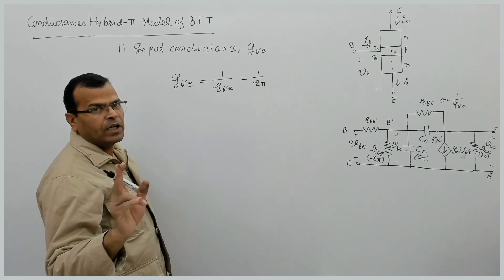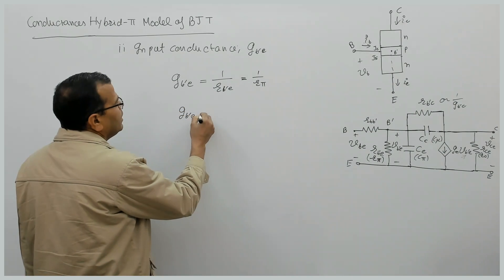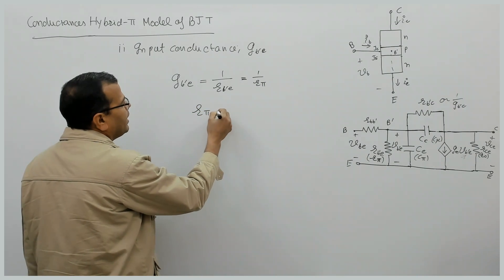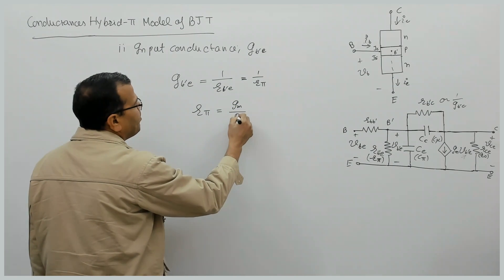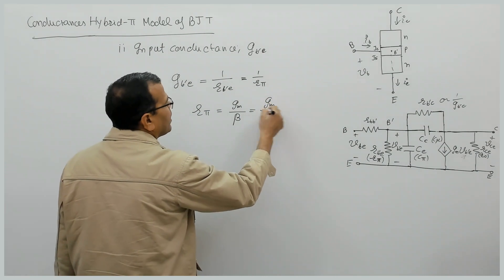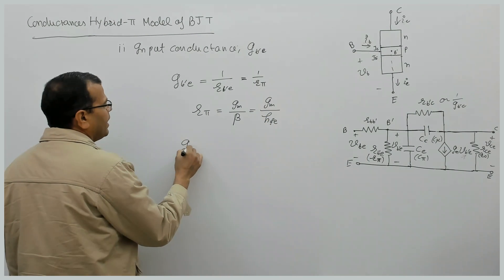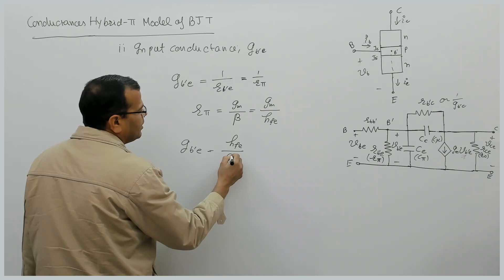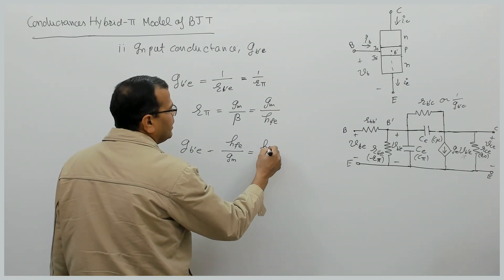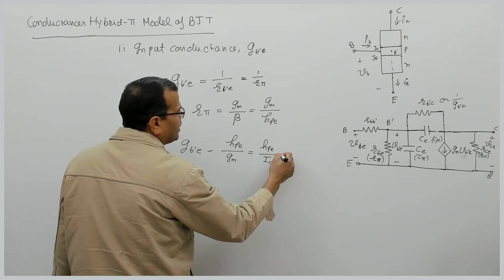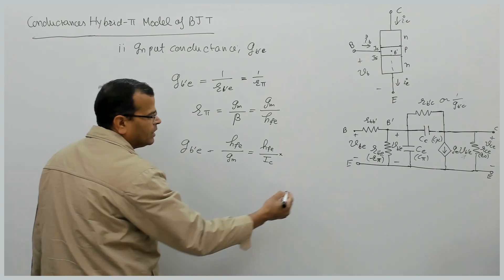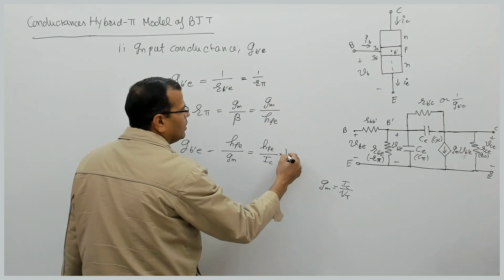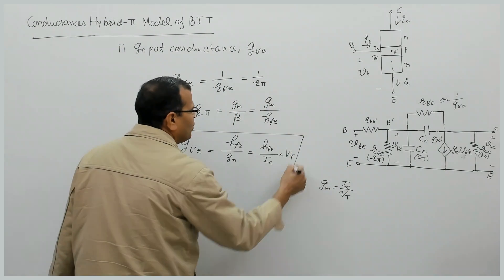It can also be written in terms of transconductance. GB dash E is equal to 1 by r pi. And if you remember the expression from the small signal model, r pi is given by beta by gm, or hfe by gm — that is the h parameter. So GB dash E can be written as hfe by gm, which can be further written as hfe into IC divided by VT, since gm is IC upon VT. This is the expression of input conductance of BJT.